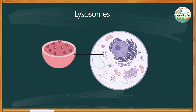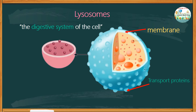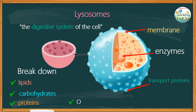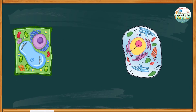Cells also have organelles that function as the digestive system of the cell — these are the lysosomes. Lysosomes contain digestive enzymes and hydrogen ions that break down lipids, carbohydrates, and proteins into small molecules that the rest of the cell can use. They are also involved in breaking down organelles that have outlived their usefulness.